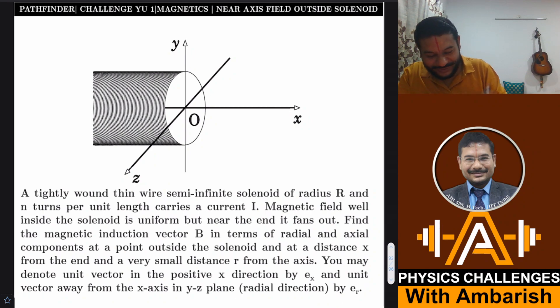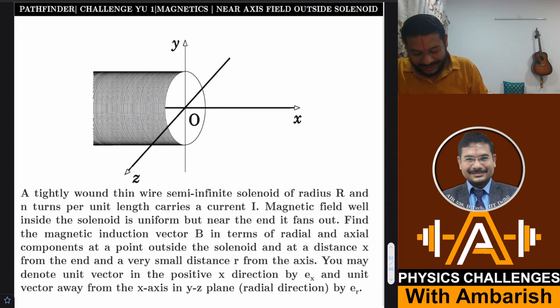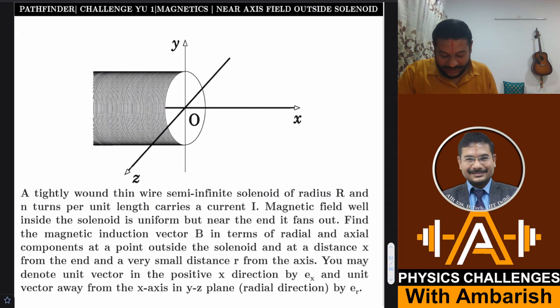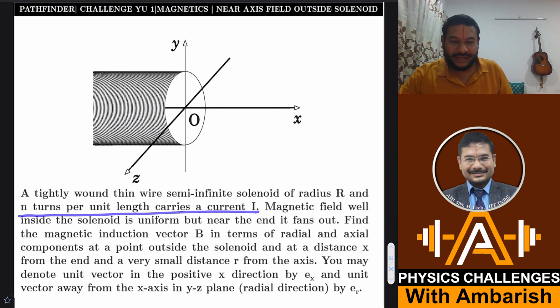Here's the problem. A tightly wound thin wire semi-infinite solenoid of radius R and N turns per unit length carries a current I.